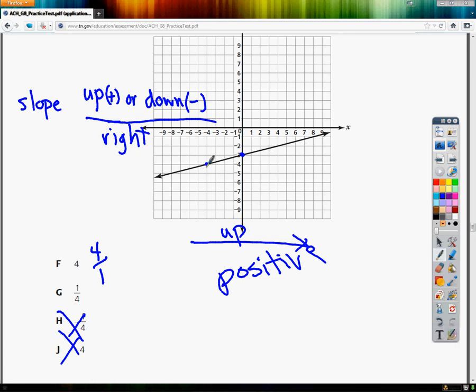So, in this situation, I'm going up one, then I'm going over one, two, three, four. So, that means I went up one and over four, so my slope is just one over four.